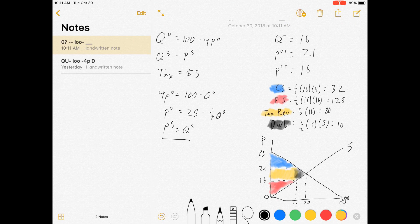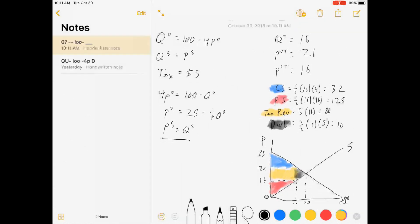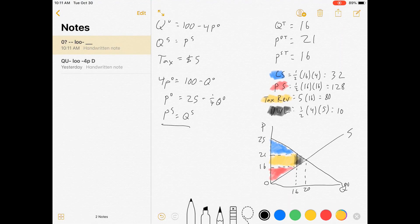Quick recap: we converted our demand and supply functions into inverse functions, then put a $5 wedge in them by either subtracting from inverse demand or adding to inverse supply, but not both. Set your tax curve equal to the other curve, solve for equilibrium quantity, plug that into the demand and supply functions to get the prices, and after that it's all the same tools we've already used. I hope this video was useful.